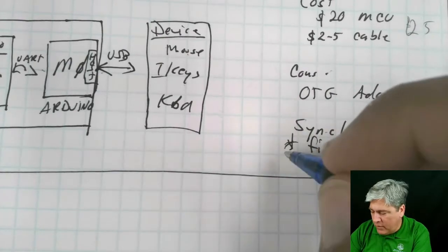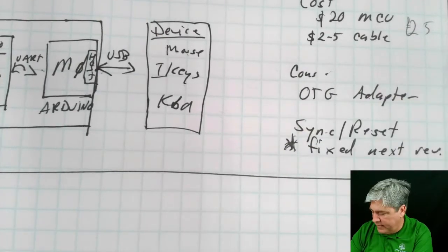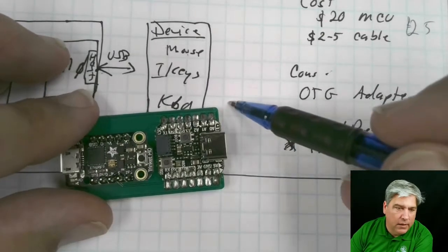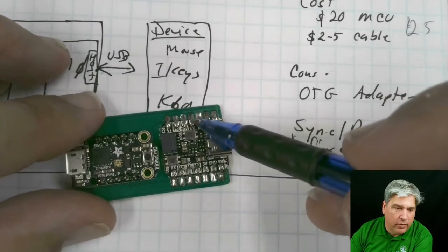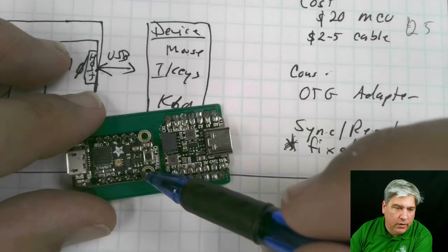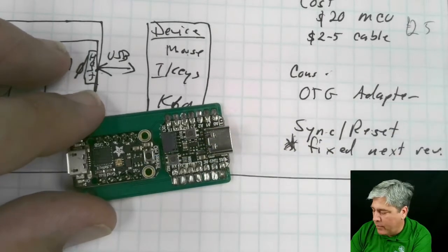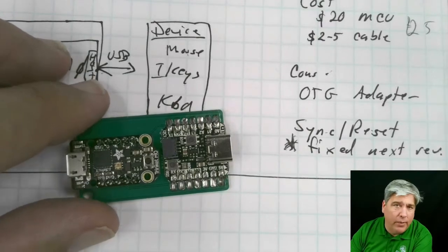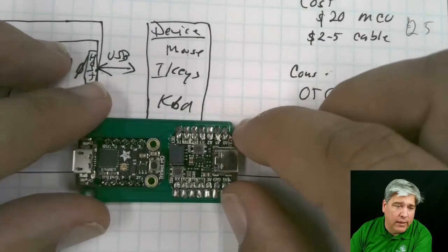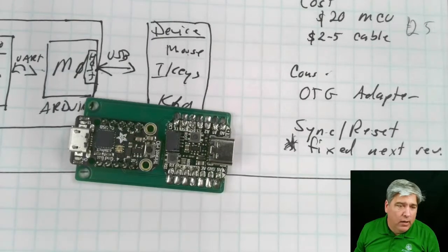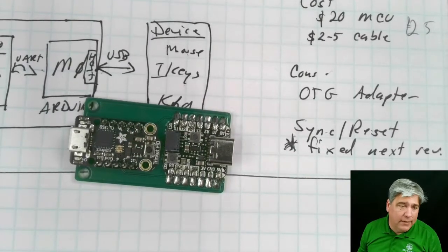The cost is about $25 actually total, same as the original one. The con is the on-the-go adapter and sync and reset. Now, I did figure out a way to fix sync and reset in this design by using one of the spare pins over here, like one of the A2 or A3, to drive the reset pin. So the one you reset, this one, it would automatically reset that one. That actually will help, and I'm going to add it to the next release.